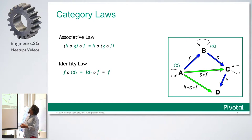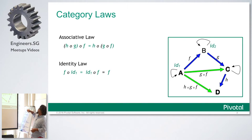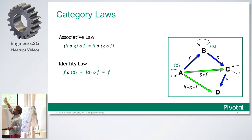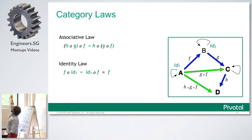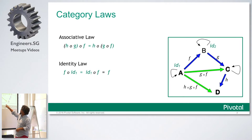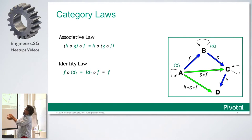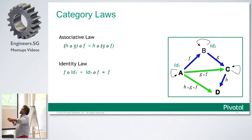Associativity is familiar to all of us. It means that if I have a category diagram with H following G following F — which is just nested function calls, simple composition — this has to compose. Evaluating H following G first and then composing with F should return the same result as first evaluating H composed with the result of G following F.